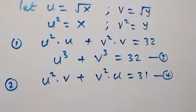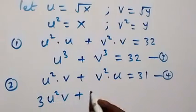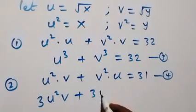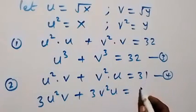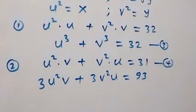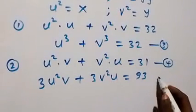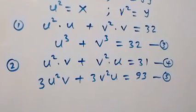Now let's multiply equation 4 by 3. This gives us 3u squared v plus 3v squared u equals 3 times 31, which is 93. Let's label this as equation 5.